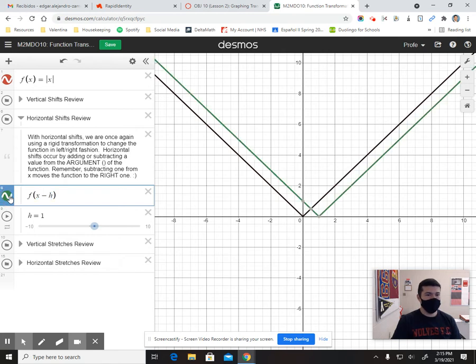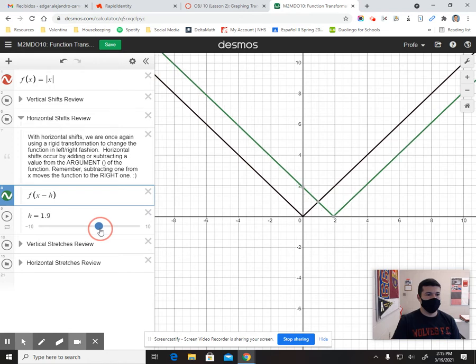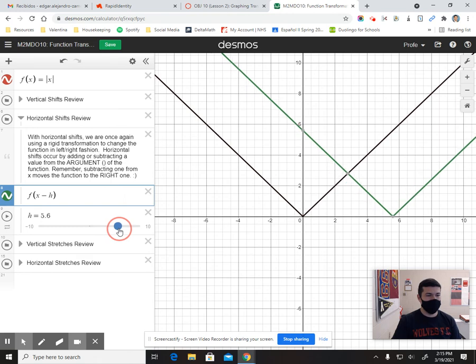If I want to move my function to the right, I subtract 1. If I want to move it to the right 2, I'll subtract 2. If I want to move it to the right 6, I'm going to subtract 6. Notice how it says f of x minus 6. All right.